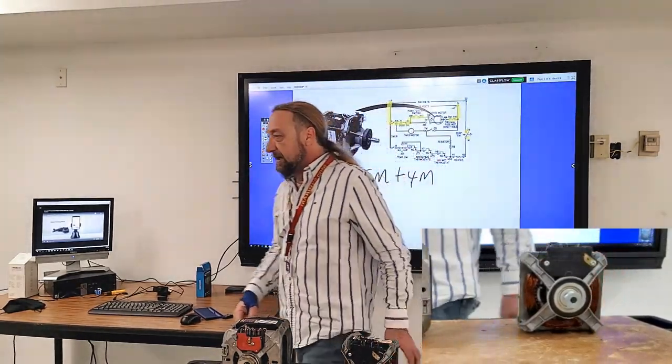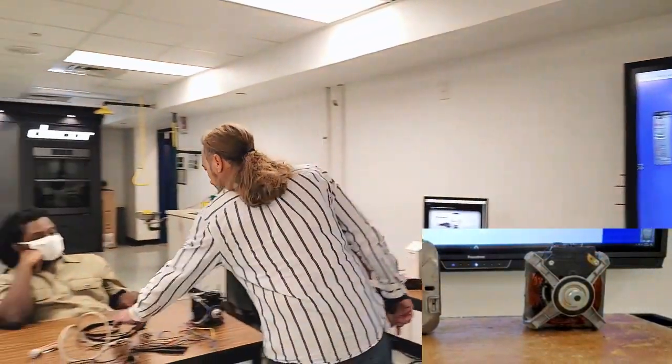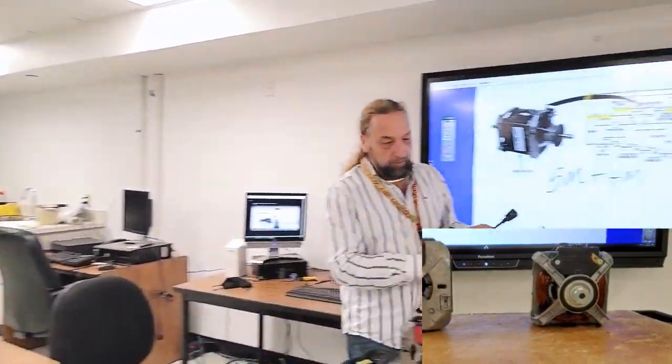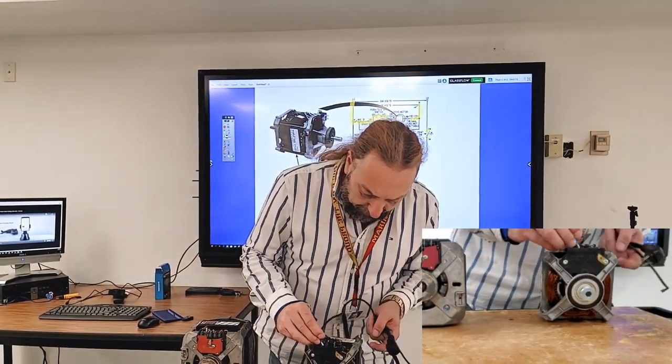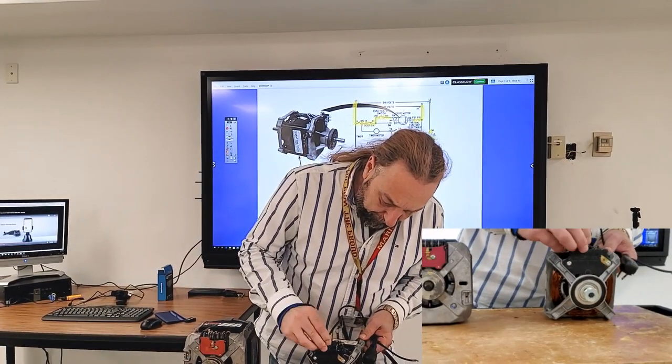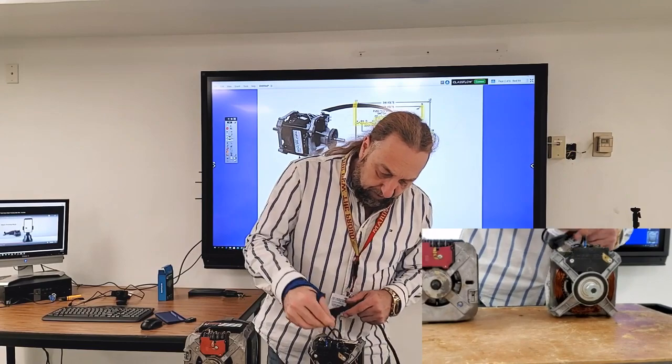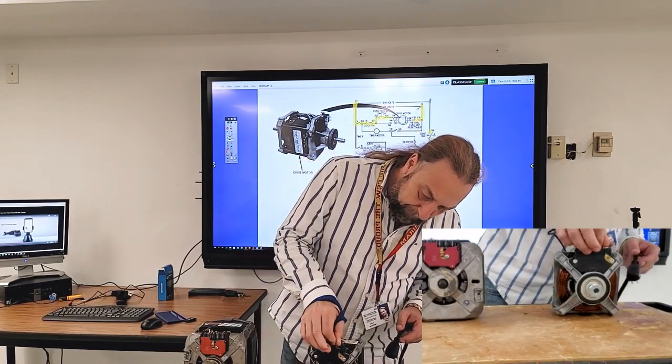So what we're going to do is we're going to take a test cord and we're going to hook up the two terminals of the test cord to both terminal four and five. This one is on four and this one is on five. And carefully, if we hook up power to it, the motor should run.